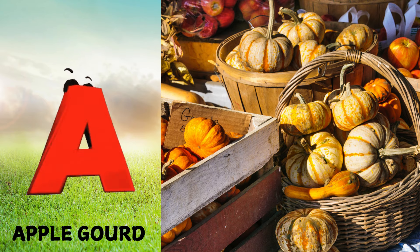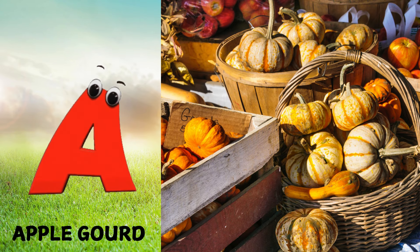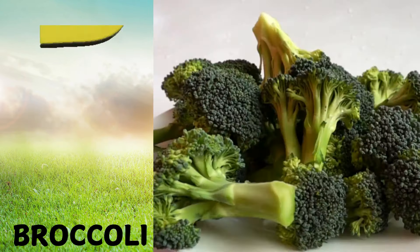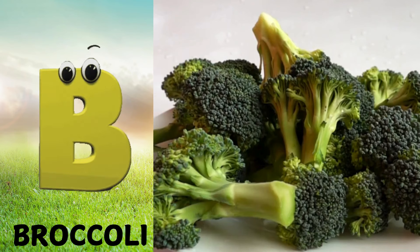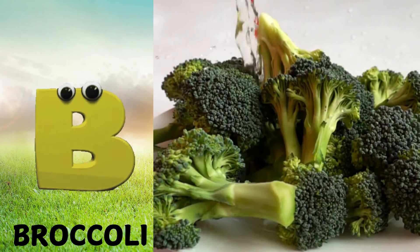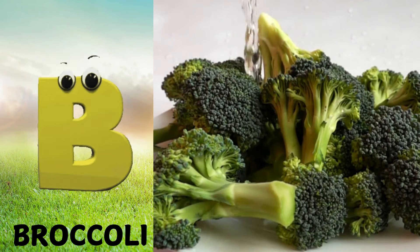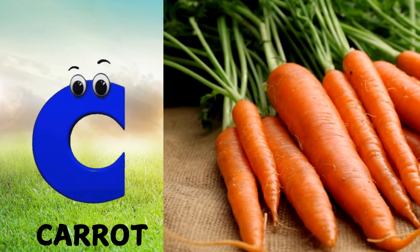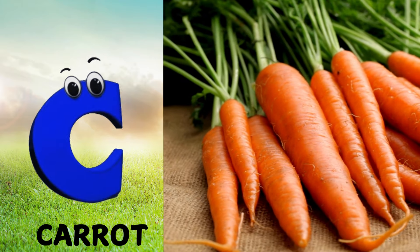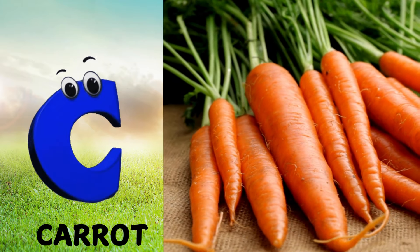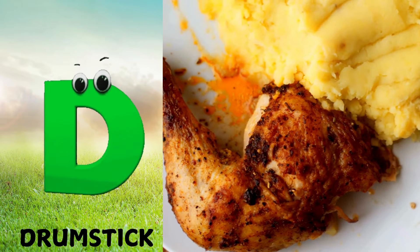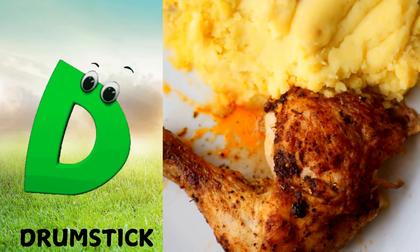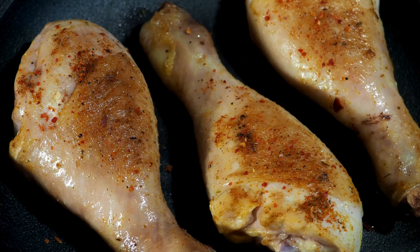A is for apple gourd, apple gourd. B is for broccoli, broccoli. C is for carrot, carrot. D is for drumstick, drumstick.